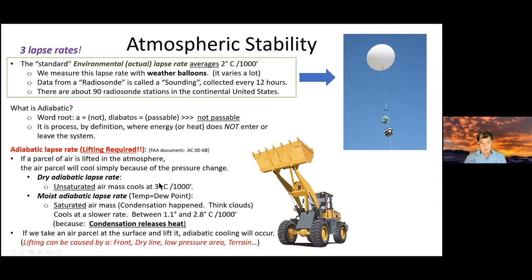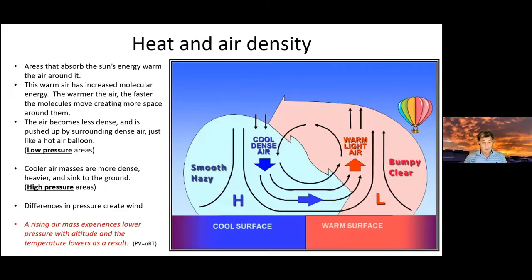This all plays into the Skew-T diagram. Here's an example of a low-pressure area: the sun heats the surface, air expands, and cooler denser air around it pushes that air up, creating a low. As the column expands, it falls back over into the cooler denser area, creating weather patterns and circulations. Low pressure is essentially air being lifted by more dense surrounding air.